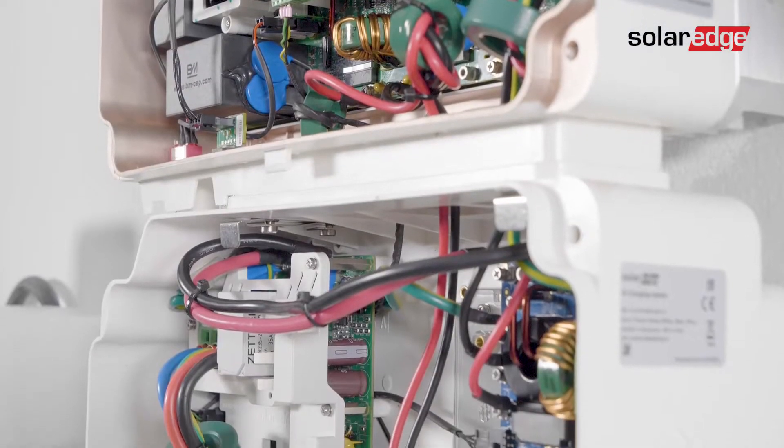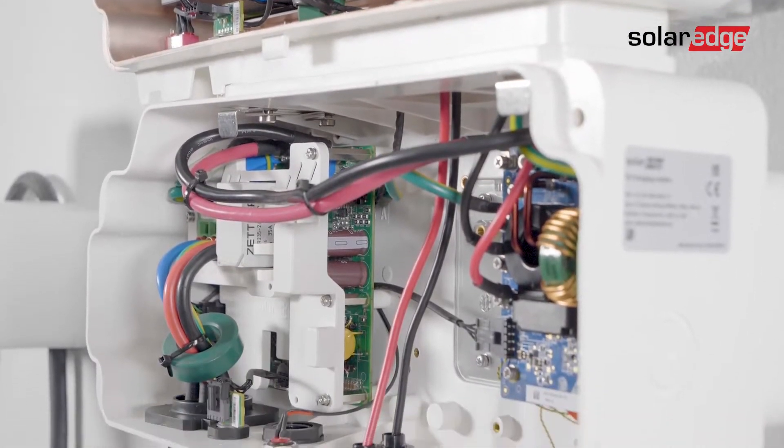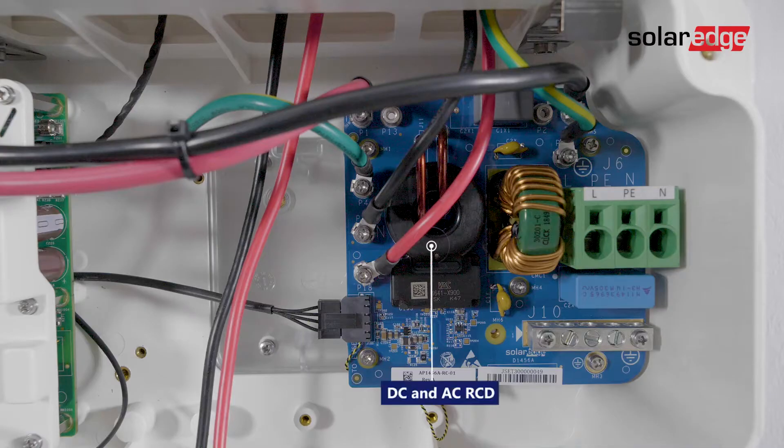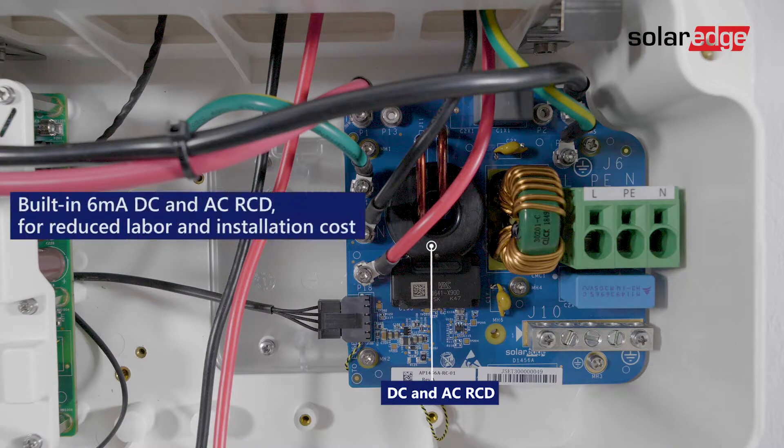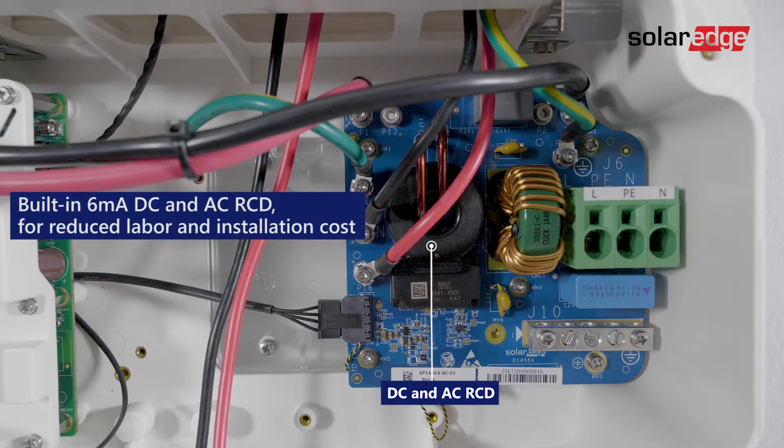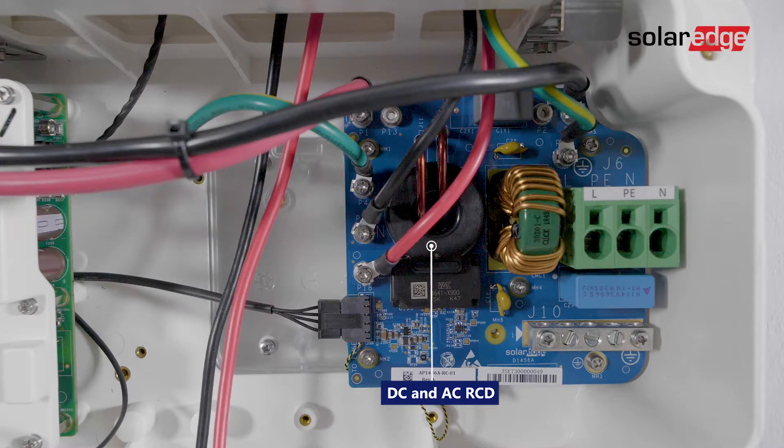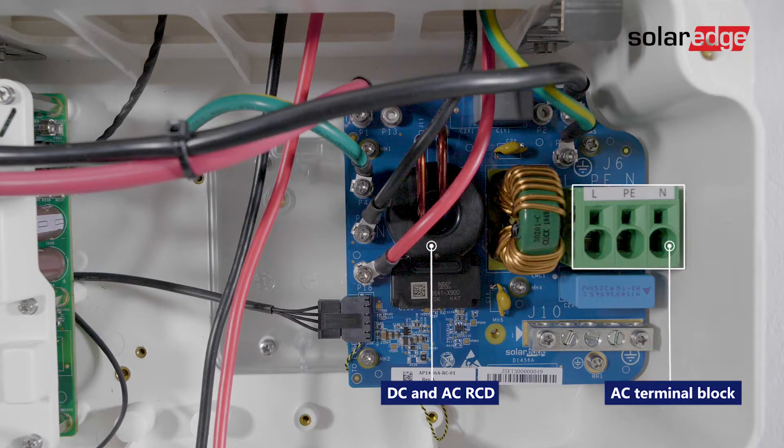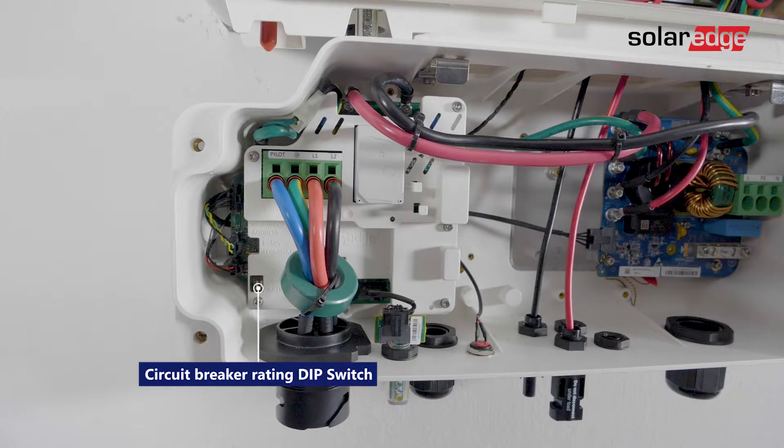Now let's identify the major components inside the connection unit. Here is the DC AC and AC RCD, the AC terminal block, and last, the circuit breaker rating dip switch.